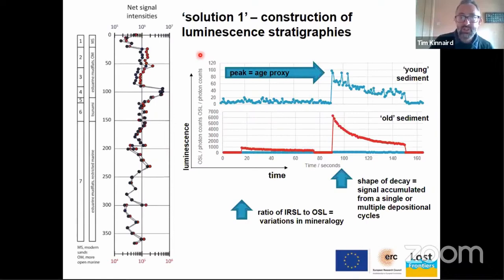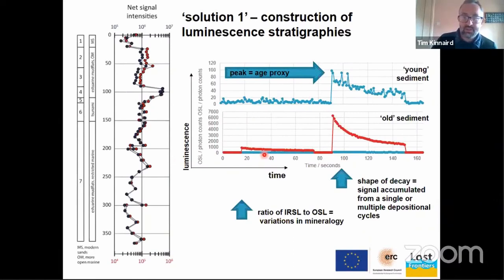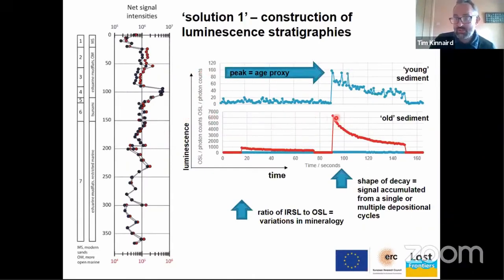The first potential solution is looking at luminescence stratigraphies. What I show here is depth in core on one axis and net signal intensities on the other. The net signal intensity is illustrated with two samples - a young sediment sample and an old sediment sample - showing one measurement cycle with a portable OSL unit. We use two stimulation methods: infrared, that's our IRSL, and blue light stimulated, that's our OSL. Young sediment has a low luminescence count, whereas the older sediment has a higher luminescence count.